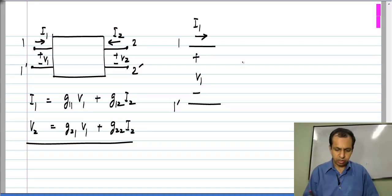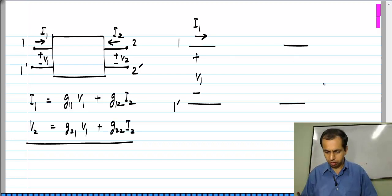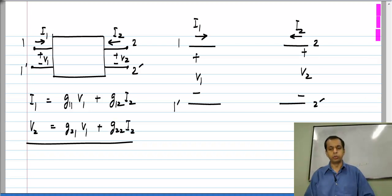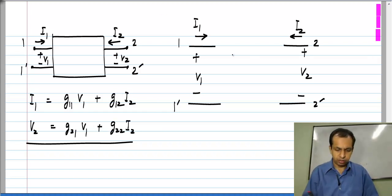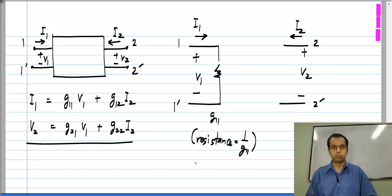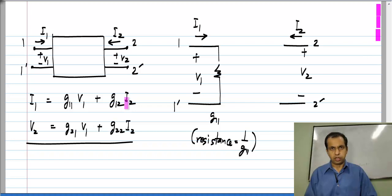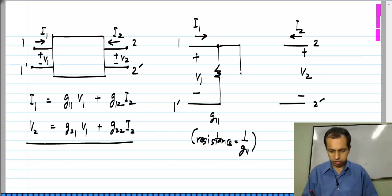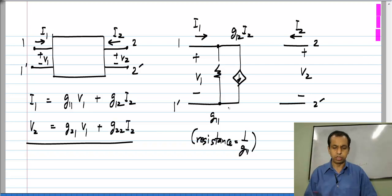Port 1 has voltage V1 and current I1, and port 2 has voltage V2 and current I2. For port 1 the first equation gives a current, so we have the sum of two parallel branches: G11·V1 represents a conductance of G11 (or resistance 1/G11). The second term gives the dependence of I1 on I2, so this is a current-controlled current source with gain G12, whose value is G12·I2.